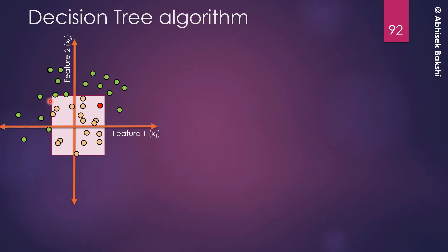This is an ideal scenario where within a particular boundary we have only one class with no misclassification. But in real life, you may have more than one class present within a decision boundary. In that case, we go for majority voting. Let's proceed to understand how this decision tree is actually created based on this particular dataset.